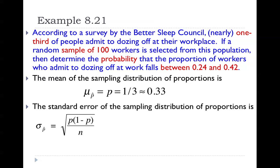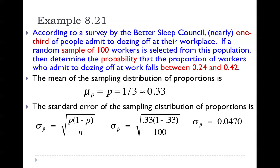Our standard error is going to be the square root of p times 1 minus p divided by n. So we take 0.33 times 1 minus 0.33, divided by n. Figure out 1 minus 0.33 first — that's 0.67. So you've got 0.33 times 0.67 divided by 100, which gives you 0.0470. This is the standard error of the sampling distribution of proportions.